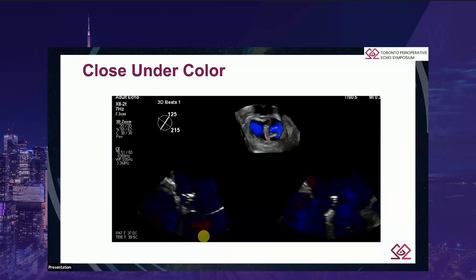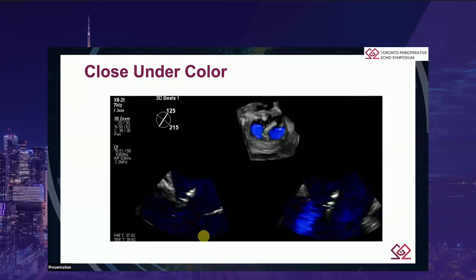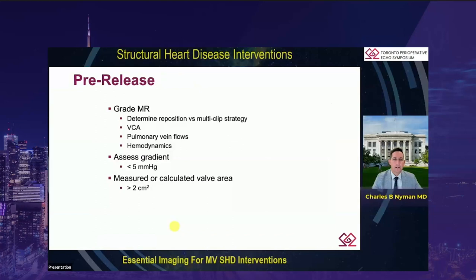Our practice is to close under color. We partially close the clip and gradually close it under color, watching over time the impact on the valve and the leak. Now that you've got your leaflets grasped, you need to do your pre-release assessment: grade the MR, determine whether to reposition if there is residual MR, or choose a multi-clip strategy. I adjudicate this by measuring a vena contracta area. Ideally we're aiming for a vena contracta area of less than 0.2, but a cut point of 0.27 residual vena contracta area may be sufficient.